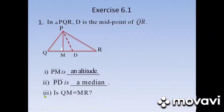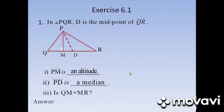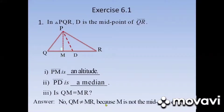Sub number three — is QM equal to MR? Observing from the figure, the distance from Q to M is not equal to the distance from M to R. So QM is not equal to MR because M is not the midpoint of QR.